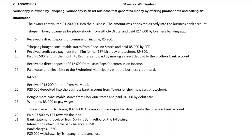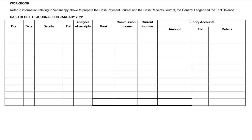Very Snappy is owned by the bank — it's an art business that generates money by offering photo shoots and selling art. According to the information, the owner contributed 1.2, which was deposited directly into the business bank account. When the owner contributes money, we are receiving money as the business, so it will be recorded in the cash receipts journal. We'll write BS, and it will go under bank and sundry capital.